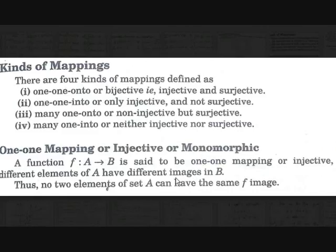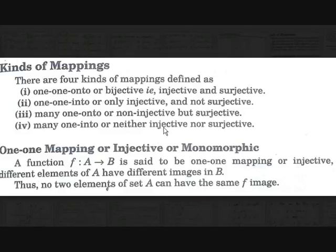There are four kinds of mappings. They are: one-one onto or bijective (both injective and surjective); one-one into or only injective and not surjective; many-one onto or only surjective; and many-one into, which is neither injective nor surjective.